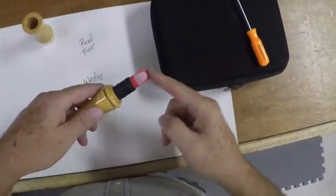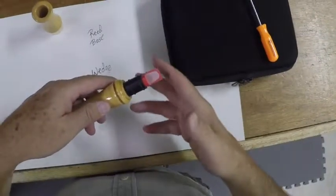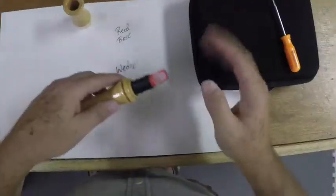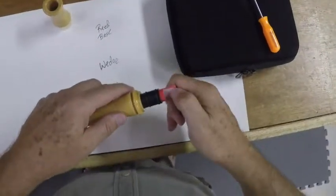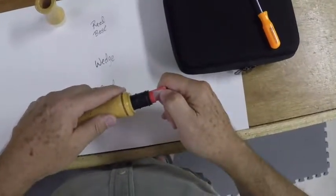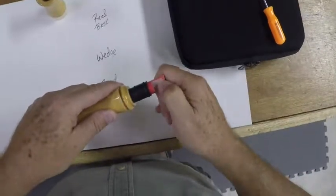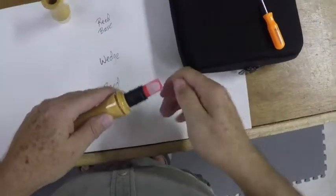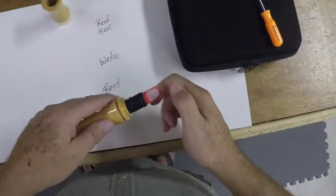I'm just going to set it into the call. Notice I'm not shoving it in, no hammers involved here. And I just want to make sure, now that I put them in place, that the end of the reed will drop into the channel on the reed base.